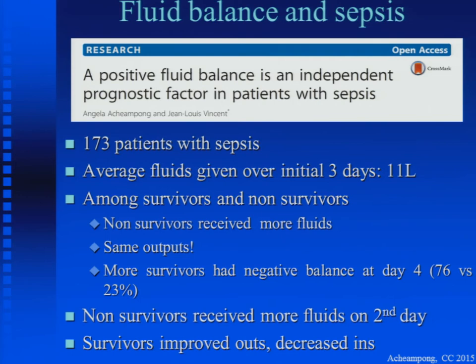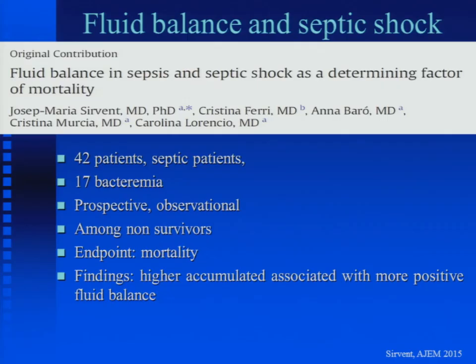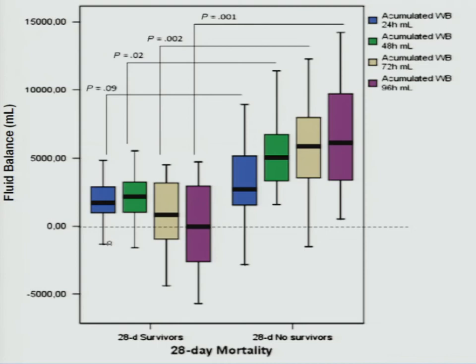You can see that as days go by, a more positive fluid balance correlates with worse outcomes. A study of 42 septic patients with bacteremia showed that higher accumulated fluid balance correlates with adverse outcomes. A graphic representation shows survivors versus non-survivors at 24 hours, 48 hours, three days, and four days — and the more fluids patients receive, the more likely they are to have increased mortality.